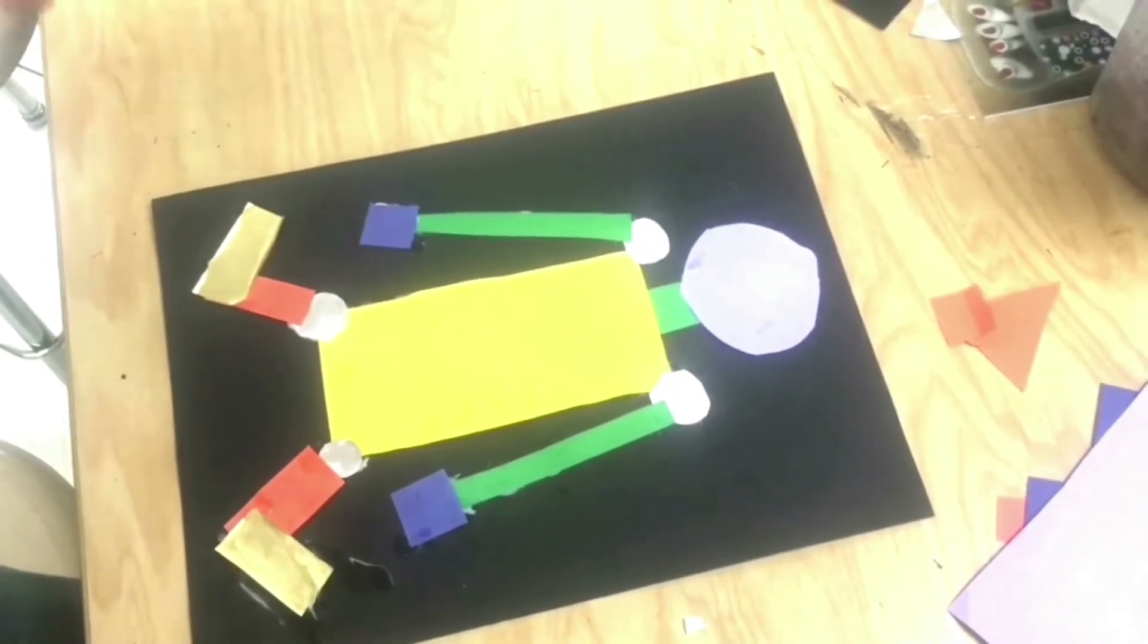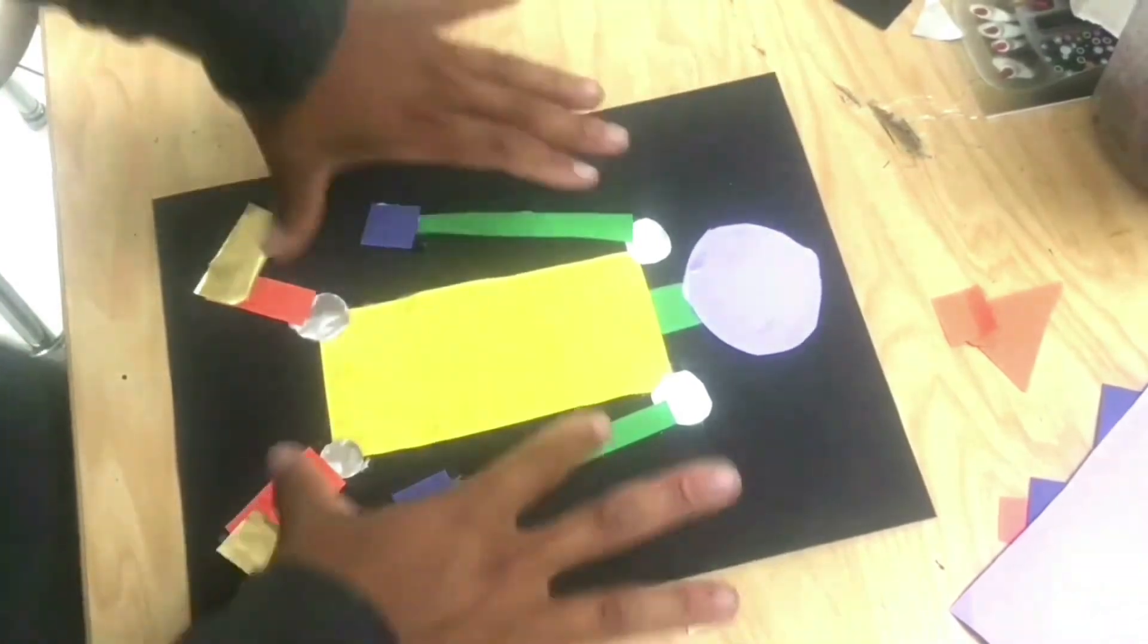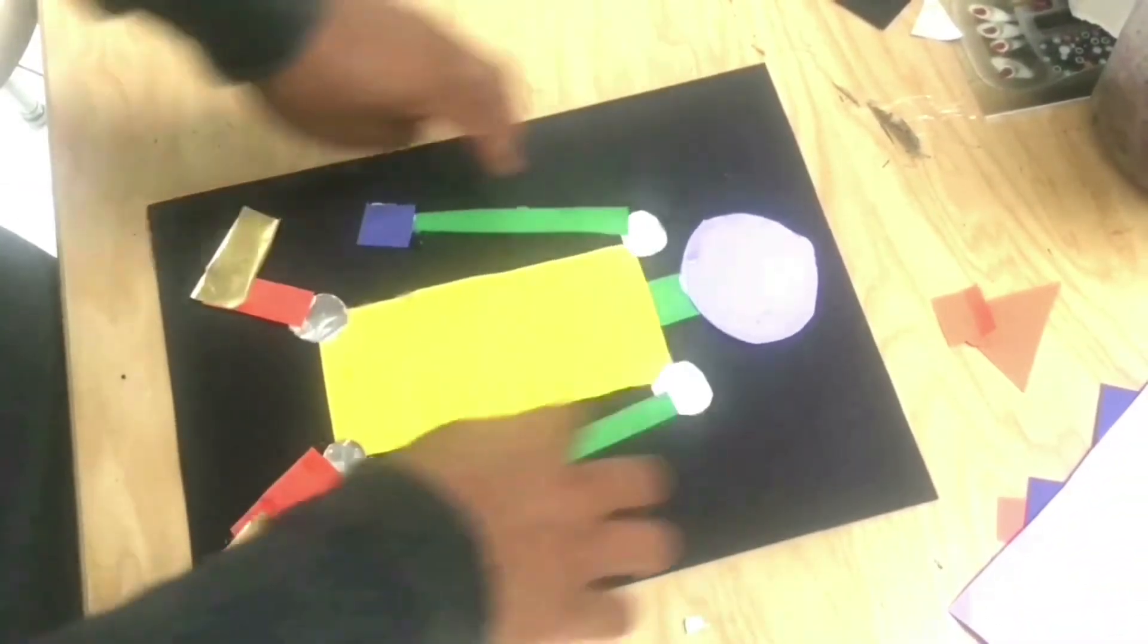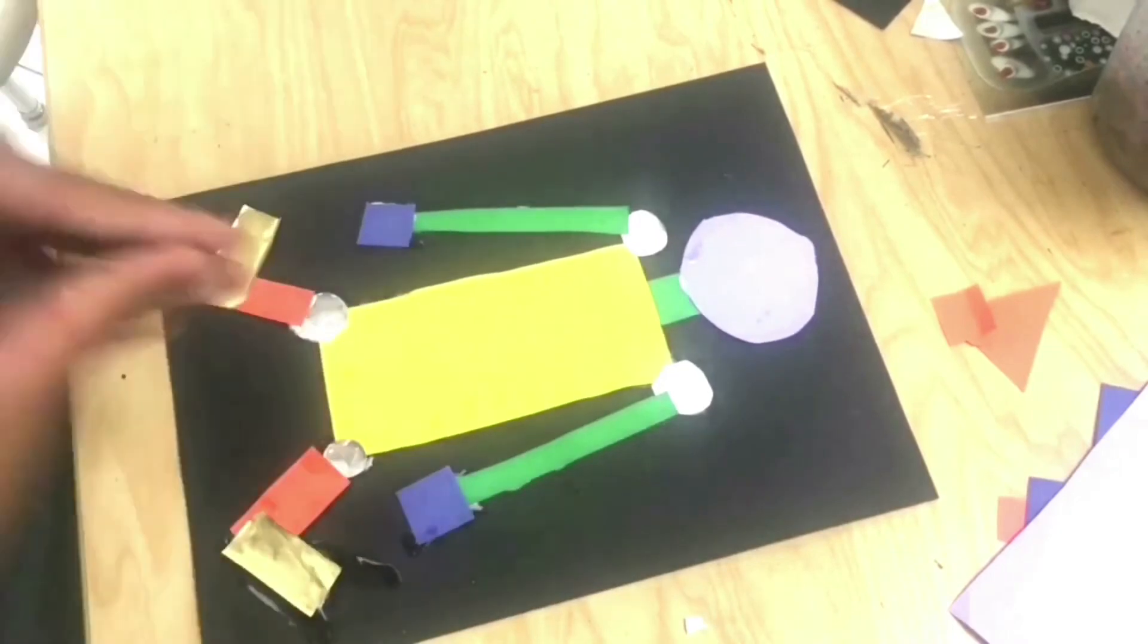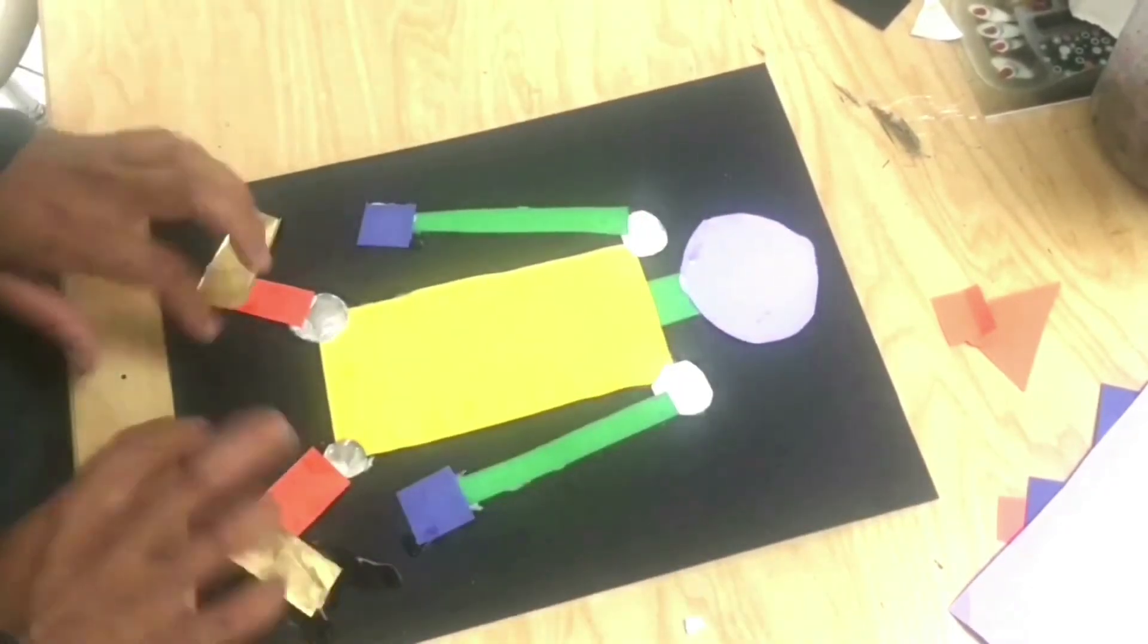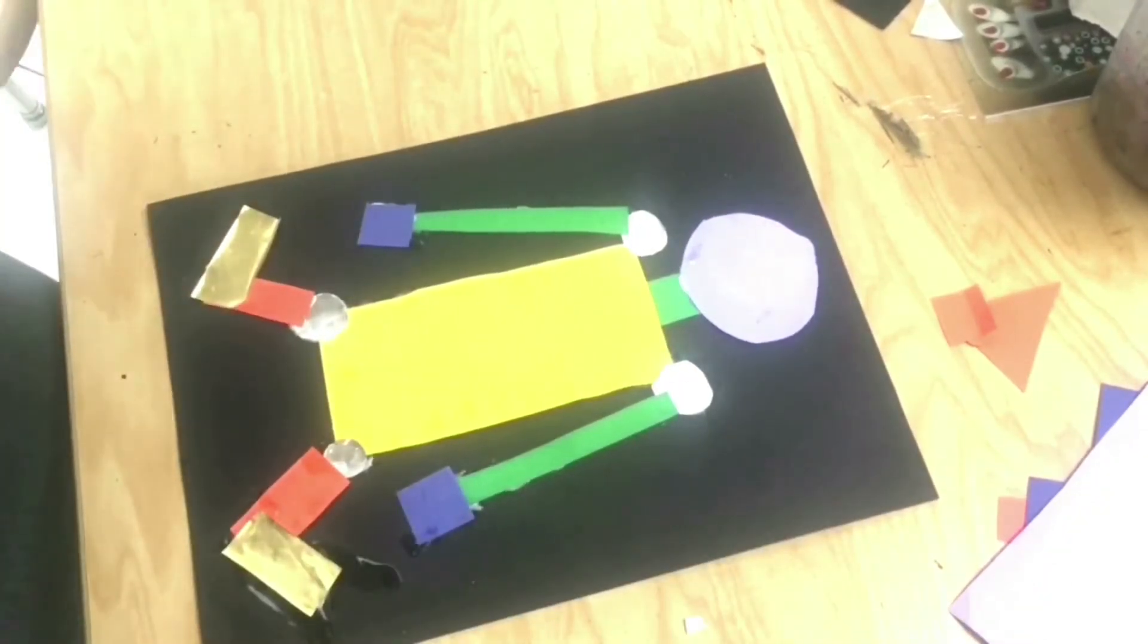Alright guys, so this is your basic form of a geometric robot. You've got a big body, you've got little arms, little legs, little feet. Notice I only use geometric shapes, so literally all you need for this project is a body, a head, arms, and legs and feet. If you have all this, you are at a level three and you're doing great.